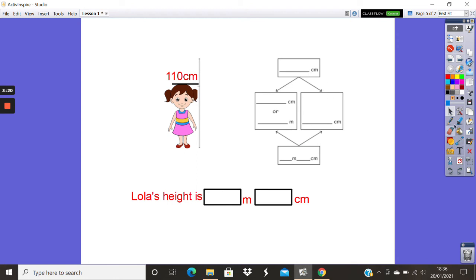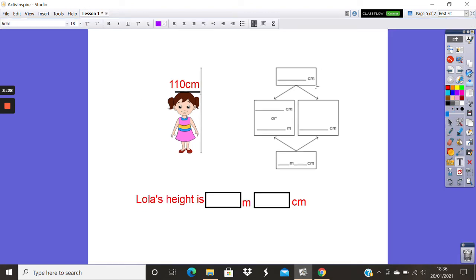Let's see if we can have a go at this one ourselves. So we've got a girl here, Lola's height is 110 centimeters. But we're going to try and convert that into meters and centimeters. So in our grid, we're going to start with 110 centimeters first.